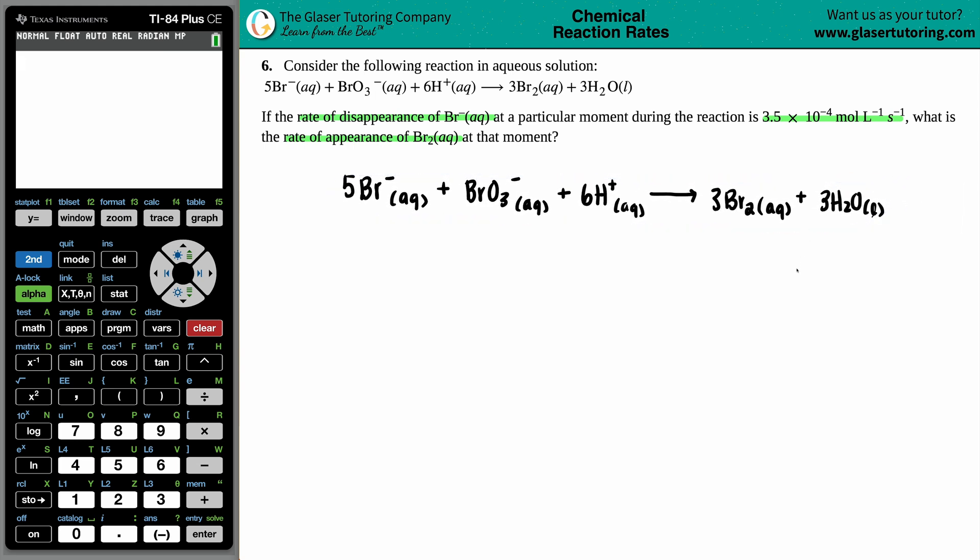Now, let's just categorize it. And they did tell me information of Br minus. So here's Br minus. They said that the rate of disappearance of Br minus at a particular moment, but the rate was 3.5 times 10 to the negative fourth.